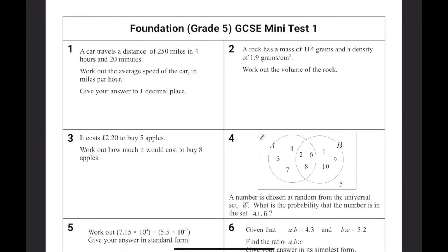So question number one. A car travels a distance of 240 miles in four hours and 20 minutes. Work out the average speed of the car in miles per hour. So we want speed equals distance over time. Our distance is 250, and because we want it in miles per hour, we want to keep our time in hours. So 20 minutes is a third, so it's going to be four and a third. If you put that into a calculator, we get an answer of 57.7 miles per hour.